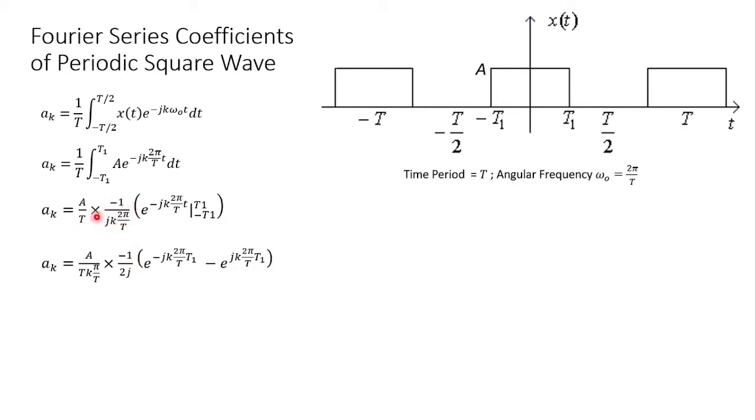In the fourth equality, we have kept the fraction -1/2j over here, whereas rest of these variables are moved towards the left side. That is A/T, so A/T is now furnished with A/(Tkπ/T). Now this is the proper definition of a sine function.